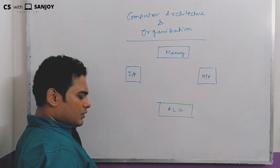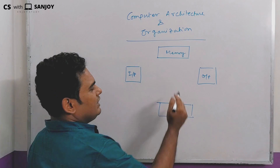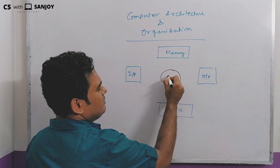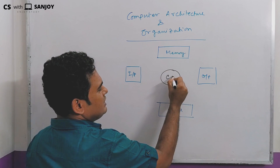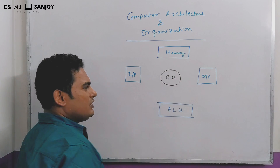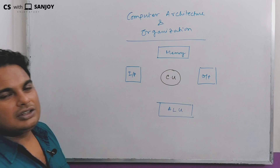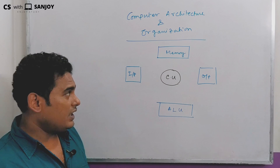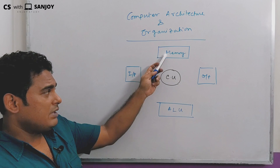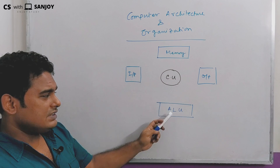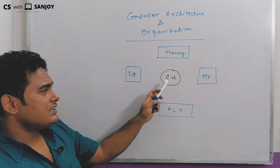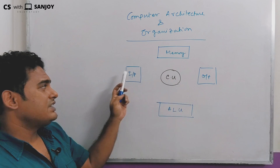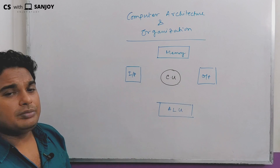The computer is also controlled by the control unit, called CU. So we have: memory, ALU, control unit, output device, and input device. These are the components of the system and the architecture of the system.